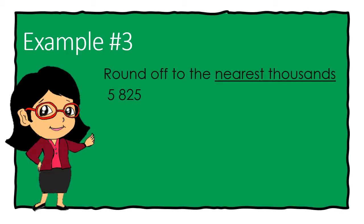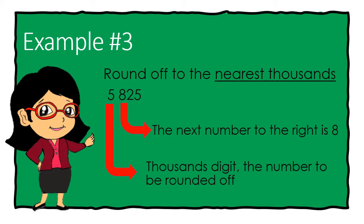Let's try the last example. Round off 5825 to the nearest thousands. 5 is on thousands place. This is the number to be rounded off. Next to it is number 8.